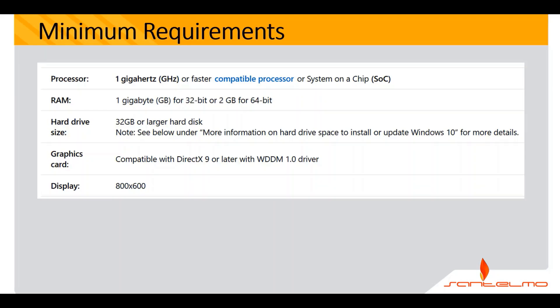For every software installation, you have to know the minimum requirements for the operating system so that it can function freely and smooth sailing. For the processor, at least 1GHz. The RAM is at least 1GB for 32-bit and 2GB for 64-bit. So what matters most here for our VirtualBox setup is the RAM. You could try 1GB or 2GB allocation, with consideration of conserving resources.